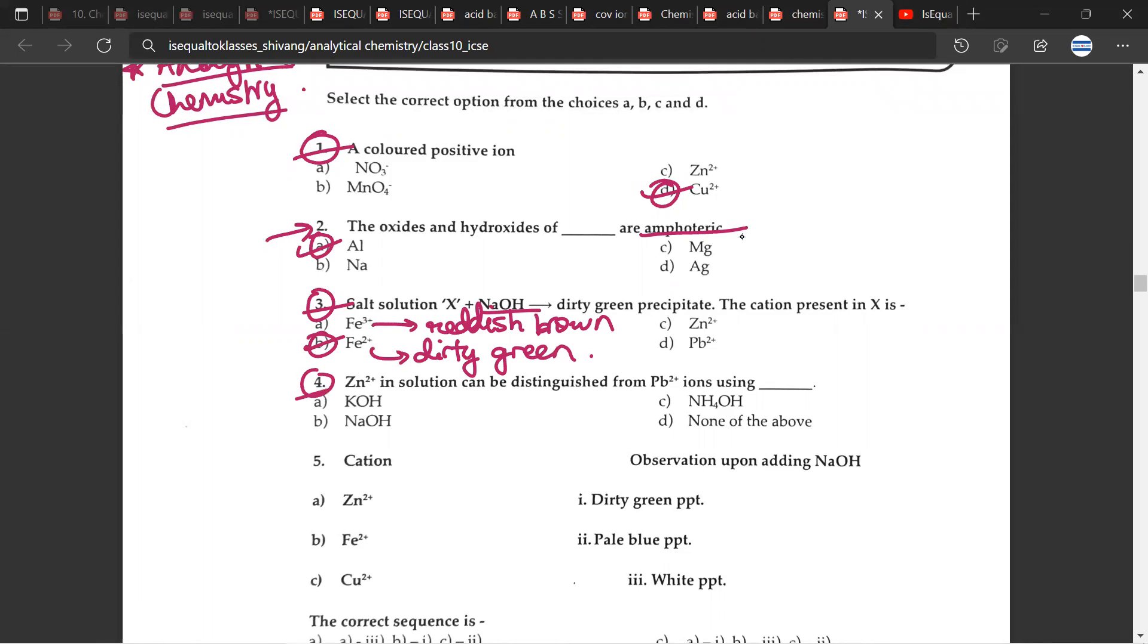The fourth question, Zn2+ in solution can be distinguished from Pb2+ ions using C, NH4OH.